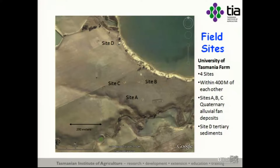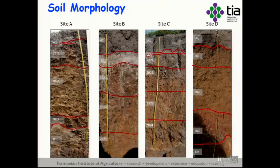I established four sites at the university farm. Three were on alluvial quaternary alluvial fan deposits, and the fourth at site D was on tertiary sediments. They were deliberately selected to be very close to one another to show the short-scale differences in the hydraulic properties of these soils. You can see their morphology differs remarkably despite being essentially the same soil type — notice the thick A2 development and sand infills at this site, the complete absence of an A2 at another, and intermediates at sites A and C.